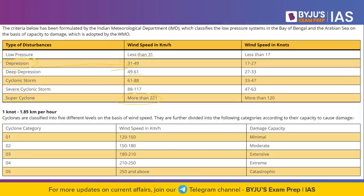There is also a cyclonic category system. Category 1 has wind speeds of up to 120 km/h; Category 2 is 120–150 km/h; Category 3 is 150–180 km/h; Category 4 is 180–210 km/h; Category 5 is 210–250 km/h; and above 250 km/h is the highest category. That is the naming convention we have to remember.